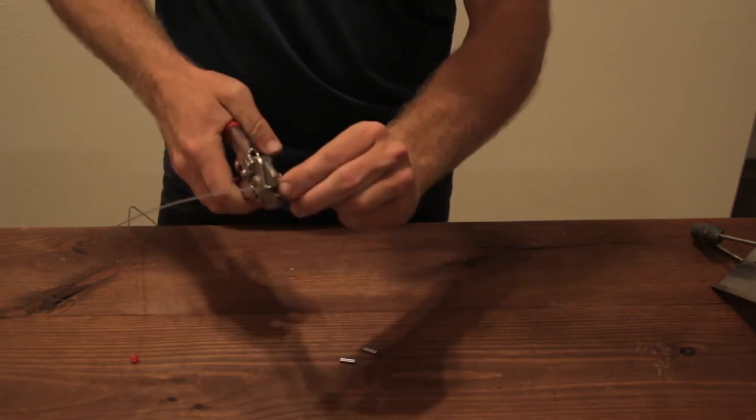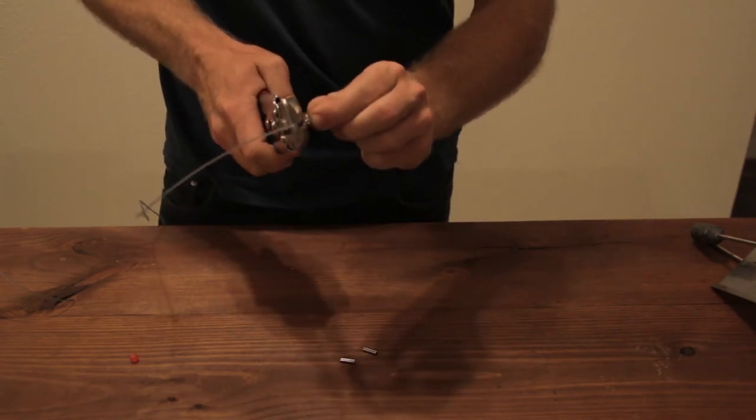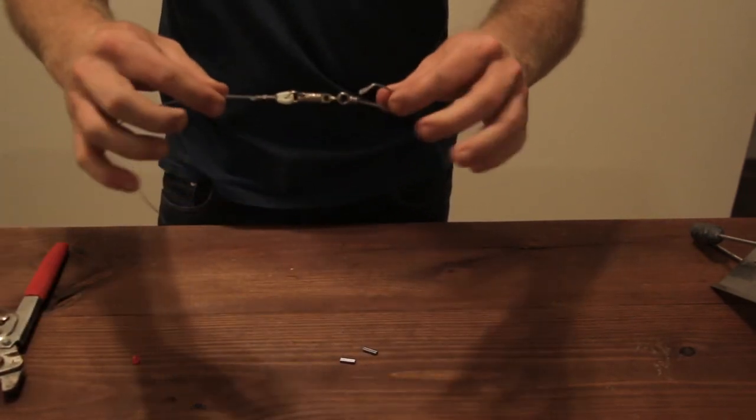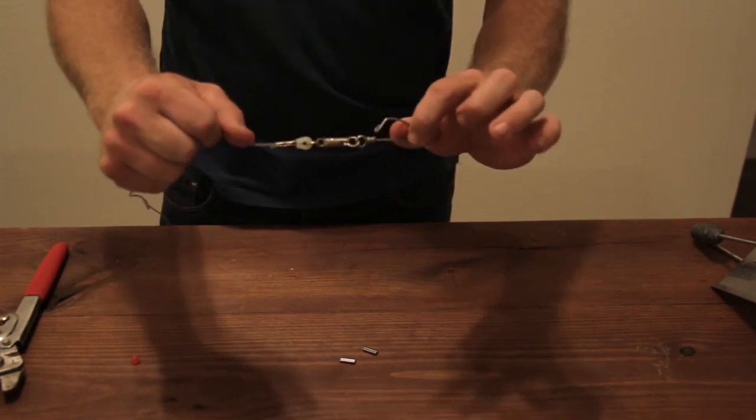I like to crimp twice, one on each side, give it a good cinch, should be good to go. And that's it, that's one side, this is the side that's going to actually clamp on to the boat.